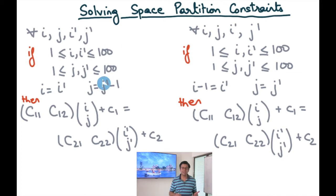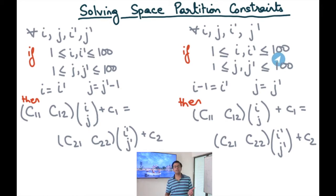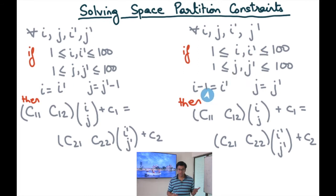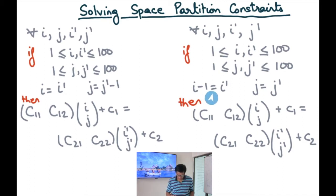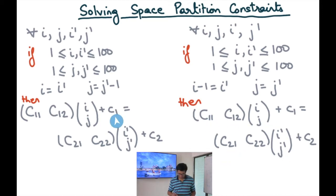Recall that C11, C12, small c1, C21, C22, small c2 are our unknowns which form part of our coefficient matrix for the processor space. The coefficient matrix multiplied with the iteration vector plus an additive small c gives me the corresponding processor ID. This represents a function from iteration space to processor space. Whenever there is a data dependency, these functions should evaluate to the same processor ID. Here is the corresponding set of constraints for yi-1j and yij — very similar, but with i minus 1 equals i' and j equals j'. Whatever our solution for these unknowns, it should satisfy both constraints.